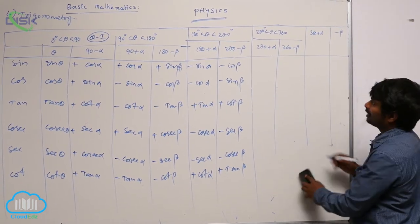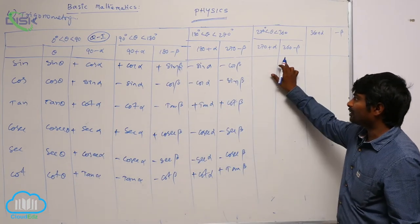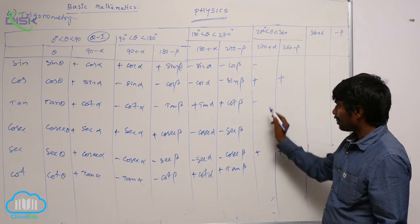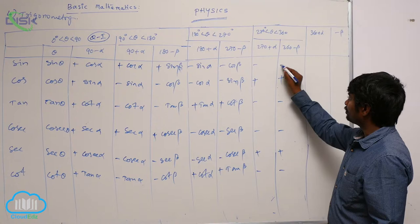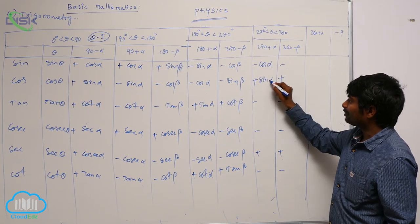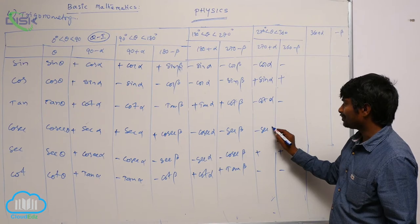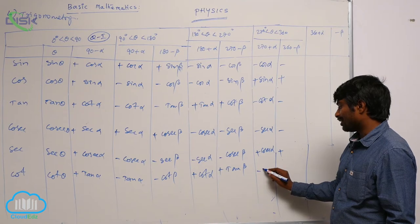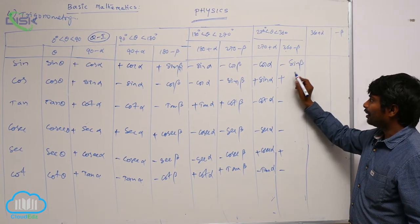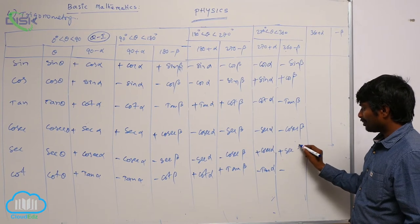In the fourth quadrant, only cos and secant are positive, and all others are negative. For 270°, sin becomes cos, cos becomes sin, tan becomes cot, cosecant becomes secant, secant becomes cosecant, and cot becomes tan. For 360°, the same ratios come: sin beta, cos beta, tan beta, cosecant beta, secant beta, cot beta.